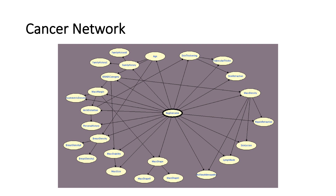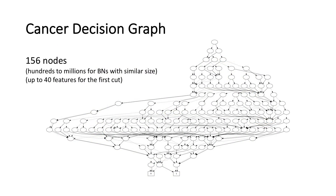Before we start, let me give you a sense of what happens when you compile these into decision graphs — the sizes really vary. One surprising result: when we compiled the cancer network we got a very small decision graph with only 156 nodes. But sometimes classifiers of similar sizes can lead to decision graphs with hundreds, thousands, or even millions of nodes, depending on the underlying logic and numbers. With our most recent algorithm, we can successfully compile classifiers with up to about four features in the general case.